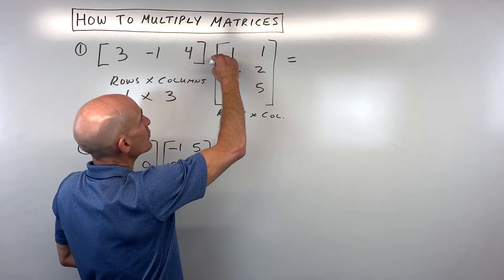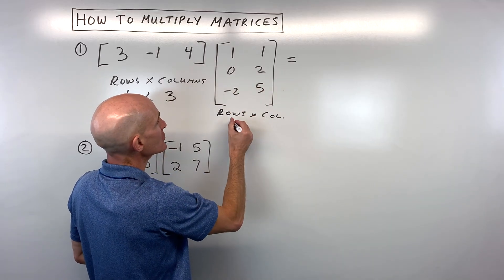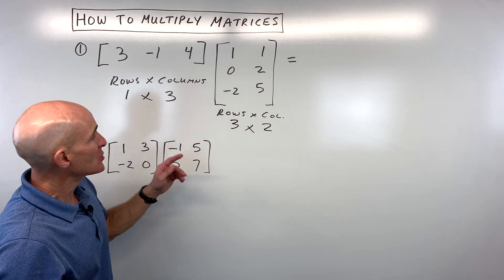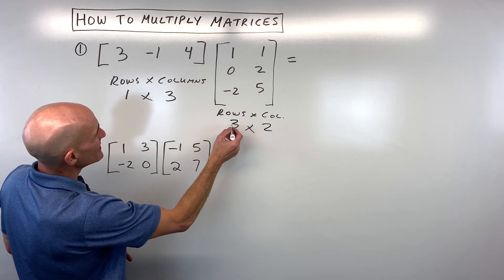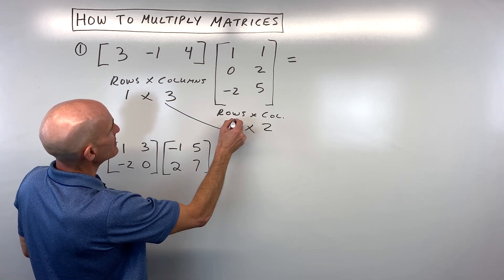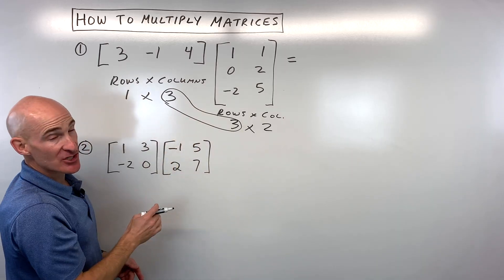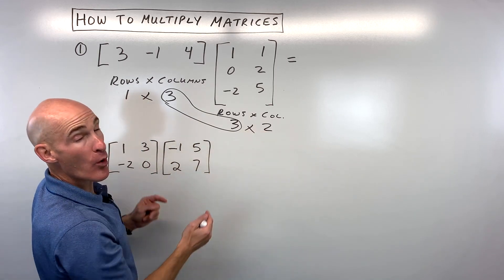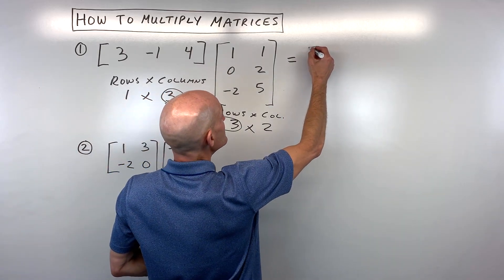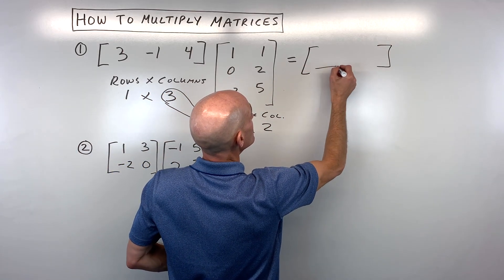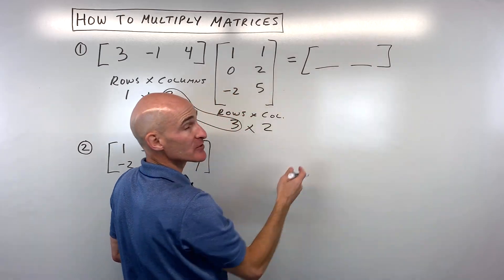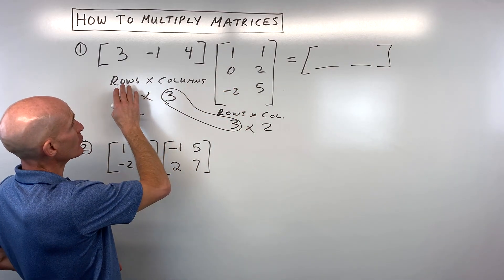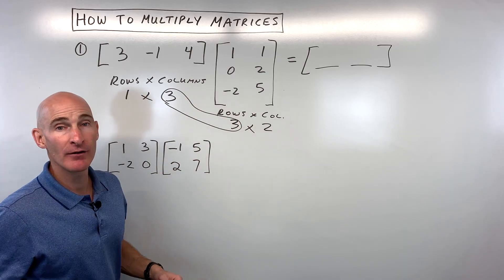Over here we have one, two, three rows and one, two columns. So when you multiply matrices, you want to make sure that these inner dimensions are the same — that they match. And you're going to end up with a matrix that has these outer dimensions — it's going to be a one by two. That means one row and two columns. Always rows first and columns second — rows by columns, forever and ever.